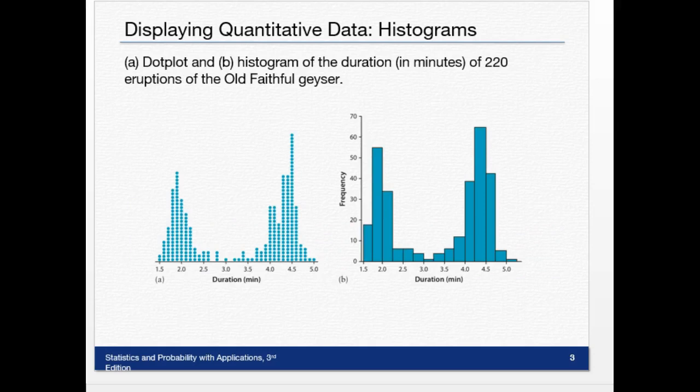So here you see, A is the dot plot of this data. It's duration in minutes of 222 eruptions of old faithful. So you can see we created this dot plot. That's fine and good. And then in B, we made a histogram. So you can see it looks kind of like a bar chart, but the bars are closer together, like they're touching. But they give us the same information.